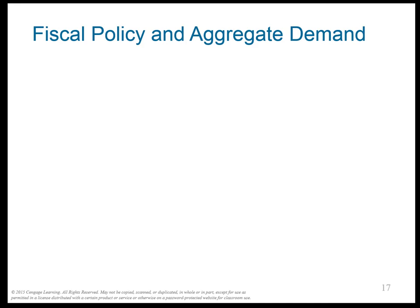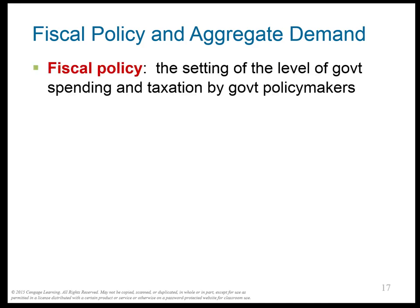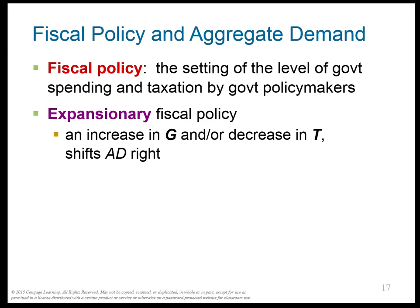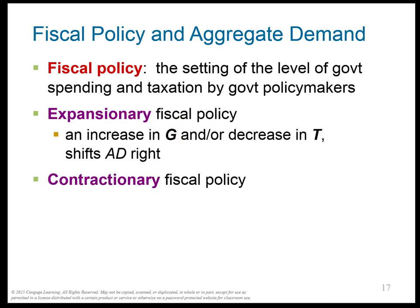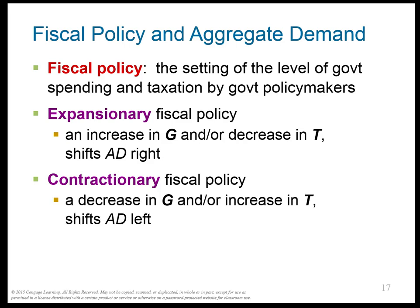Now let's switch gears and leave monetary policy for fiscal policy. Fiscal policy is not done by the Fed — it's the setting of the level of government spending and taxation by policymakers: the president, Congress, or state and local governments — anybody but the Fed. Expansionary fiscal policy increases government spending or decreases taxes, and both shift the AD curve to the right. Contractionary fiscal policy decreases government spending or increases taxes, shifting the AD curve to the left.